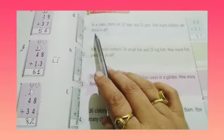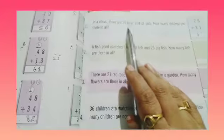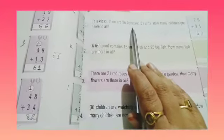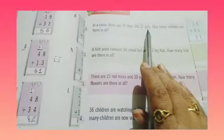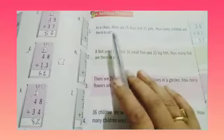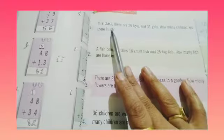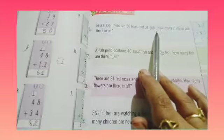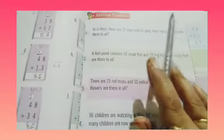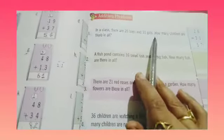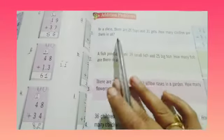Question number 1. In a class, there are 26 boys and 31 girls. How many children are there in all? In a class, there are 26 boys and 31 girls. We have to find the total number of students in that class. So, we will do 26 plus 31, which is 57.